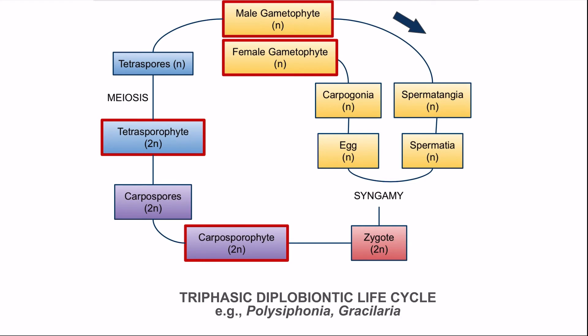The gametophyte is the haploid stage, whereas the carposporophyte and tetrasporophyte are diploid stages. So this is known as the triphasic diplobiontic life cycle. The male gametophyte has antheridia or spermatangia; the female gametophyte has carpogonia or oogonia. In the carpogonia, the female gamete or egg is formed. In the spermatangia, male gametes or spermatia are formed. Egg and spermatia fuse and after syngamy a diploid zygote is formed. The difference here is that the zygote without undergoing meiosis directly forms the carposporophyte.